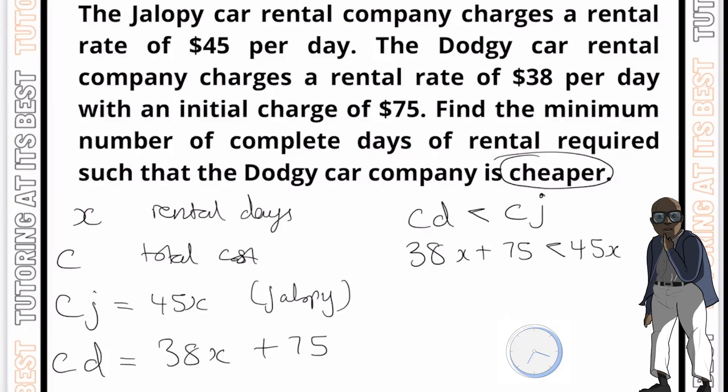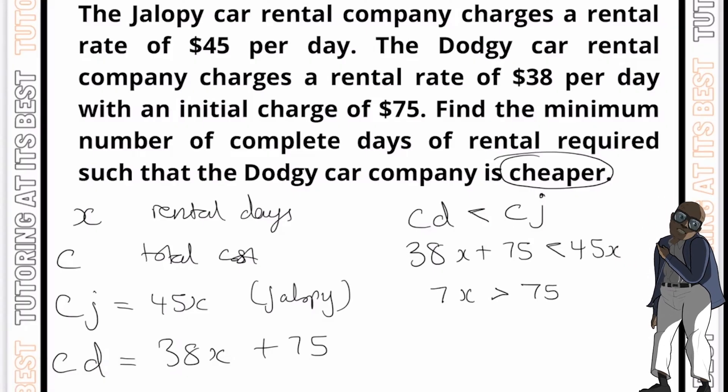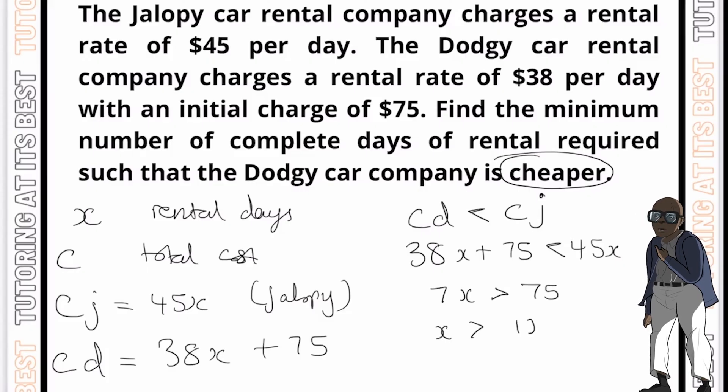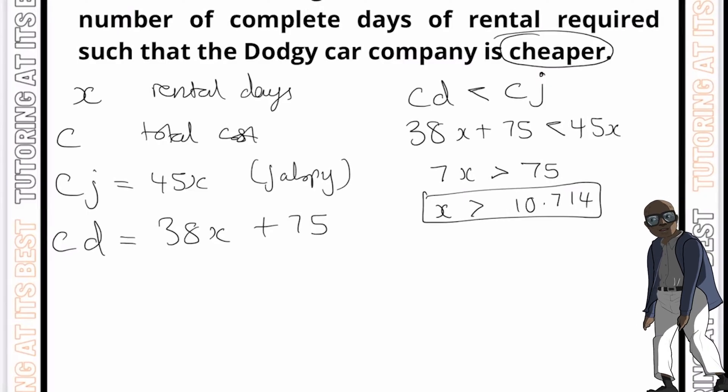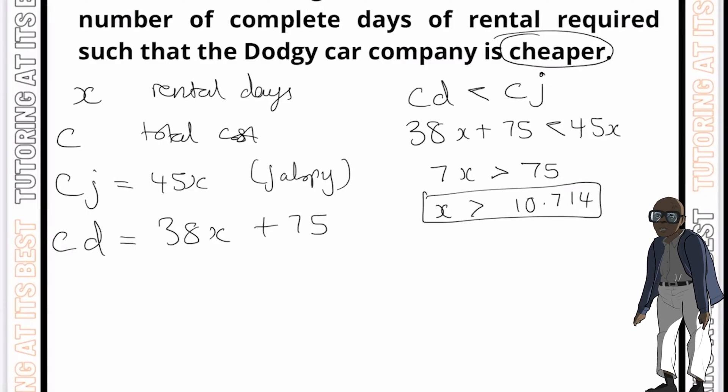So if we put the X's together, we will get 7X plus, we will get 7X which is greater than 75. So now we know X is then greater than 10.714. And please remember that we must round up to the nearest integer because we cannot rent a car for a fraction of a day. Therefore, the minimum number of complete days of rental required such that the dodgy car company is cheaper is 11.